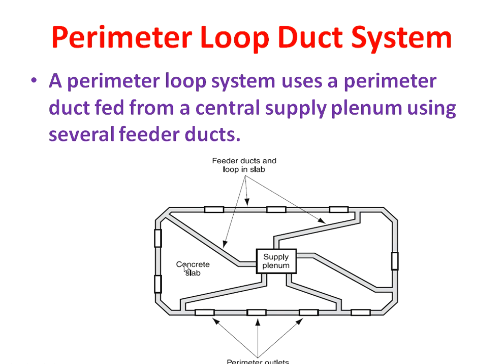This entire system is always constructed inside the concrete slab — the ducts are embedded inside the concrete slab. These are the perimeter outlets, which are used for supplying air inside the room or cooling area. This is the construction of the perimeter loop duct system.